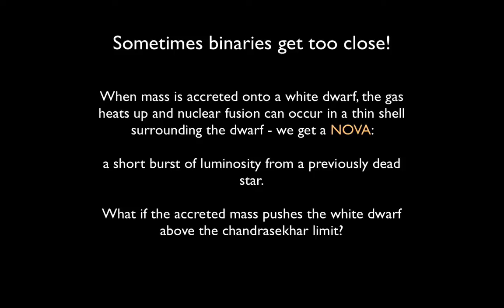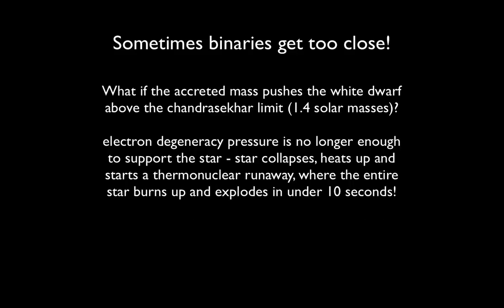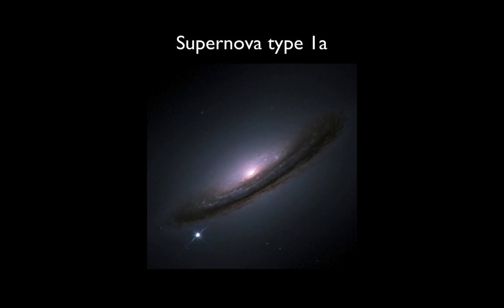But what if the accreted mass pushes the white dwarf above the Chandrasekhar limit? Remember, that Chandrasekhar limit is the limit is 1.4 solar masses, and that's the highest mass that can be held apart by electron degeneracy pressure. So anything higher than that mass, and the force from gravity is just too high, and so the degeneracy pressure amongst the electrons is just not strong enough to hold the star apart. So what if, in one of these periods of mass transfer, you accrete more mass than the white dwarf can hold? Well, in that case, electron degeneracy pressure is no longer strong enough to support the star, and the star collapses. It heats up and starts a thermonuclear runaway process, where the entire star will burn up and explode in under 10 seconds. And that's what's called a supernova type 1a.